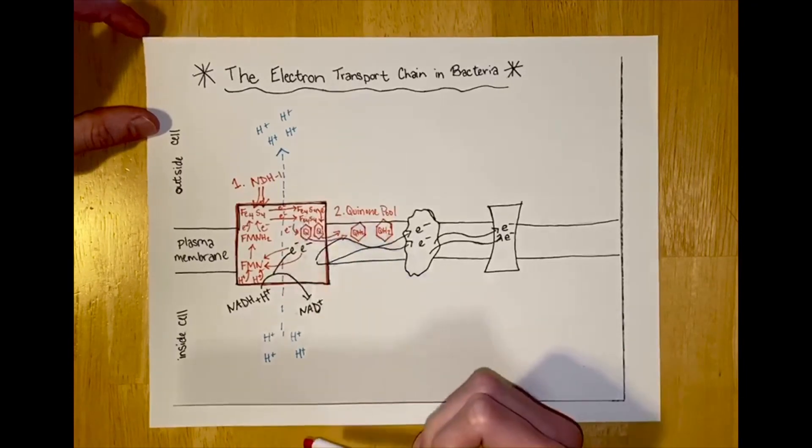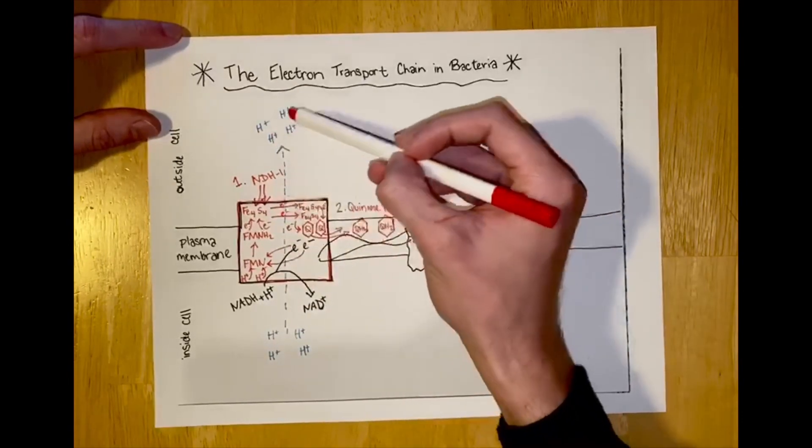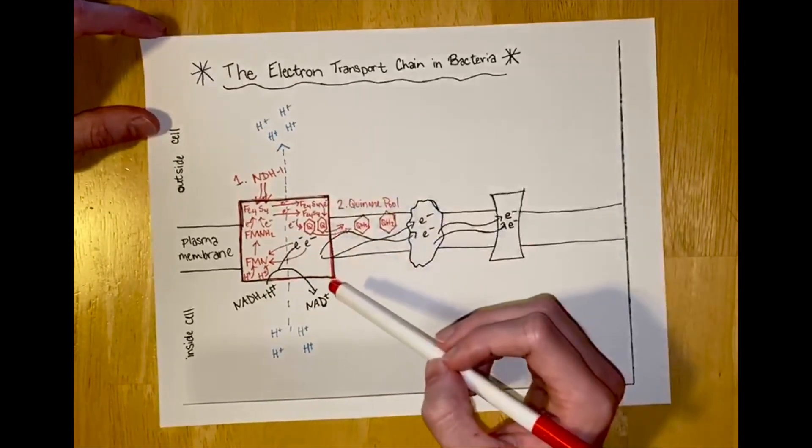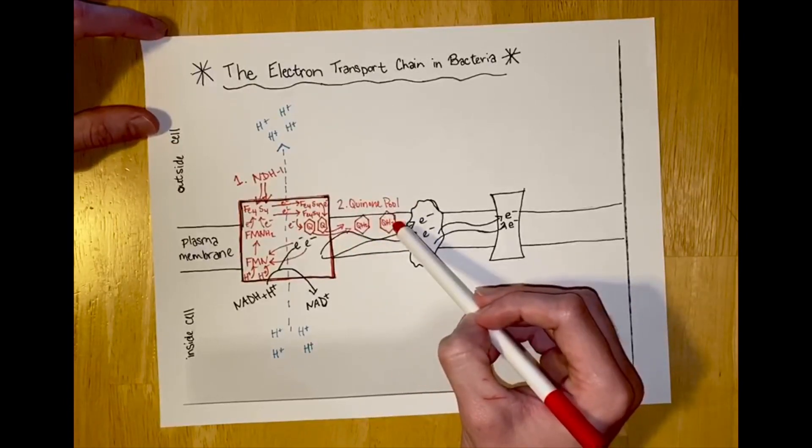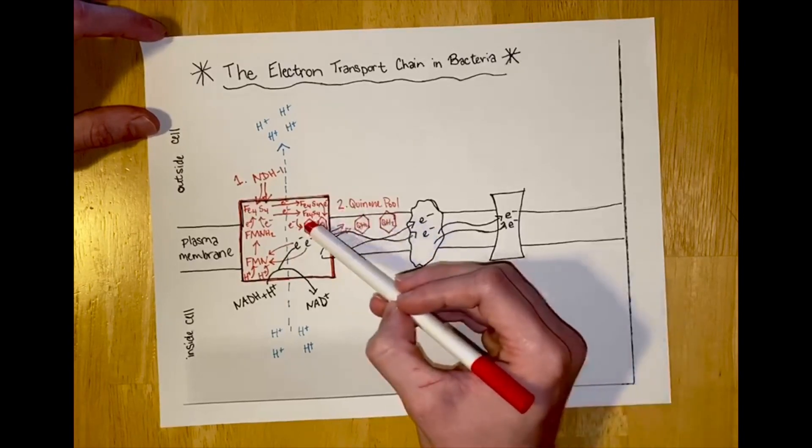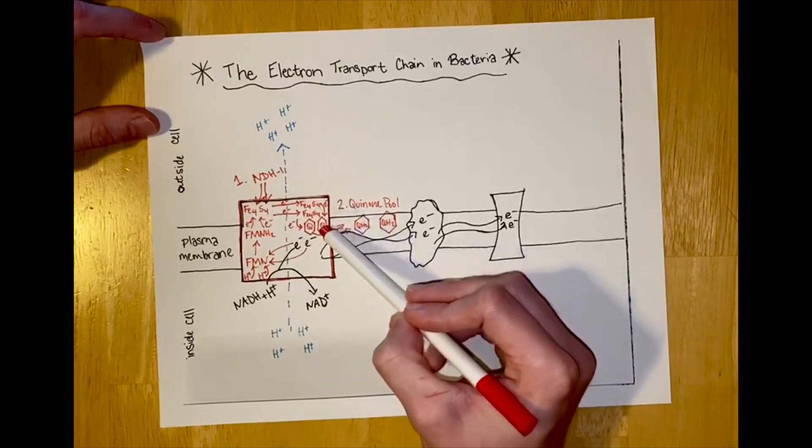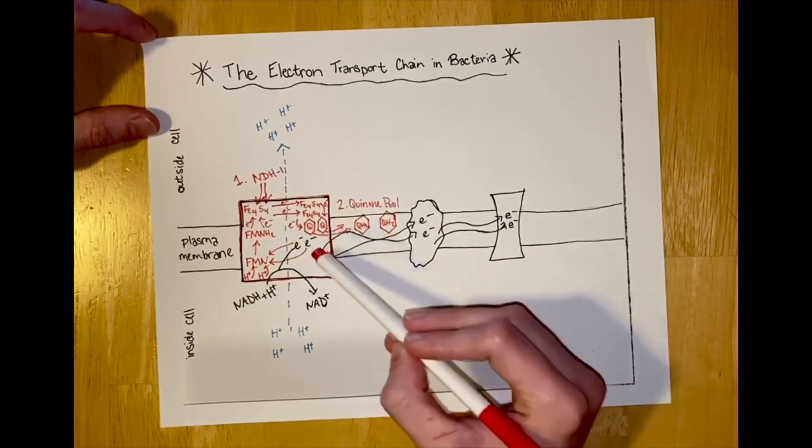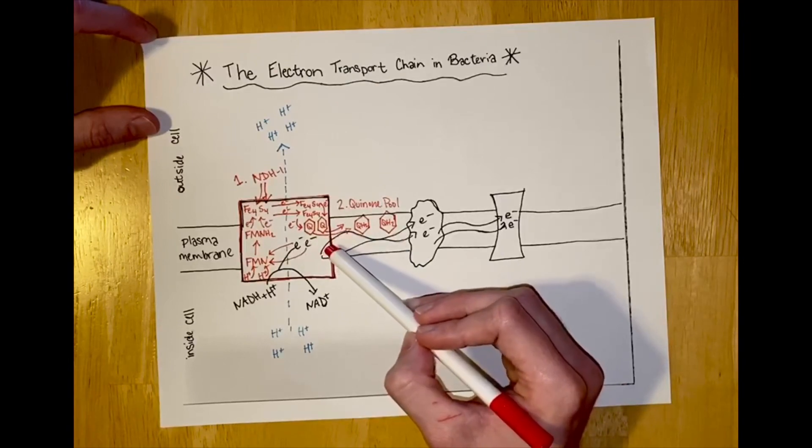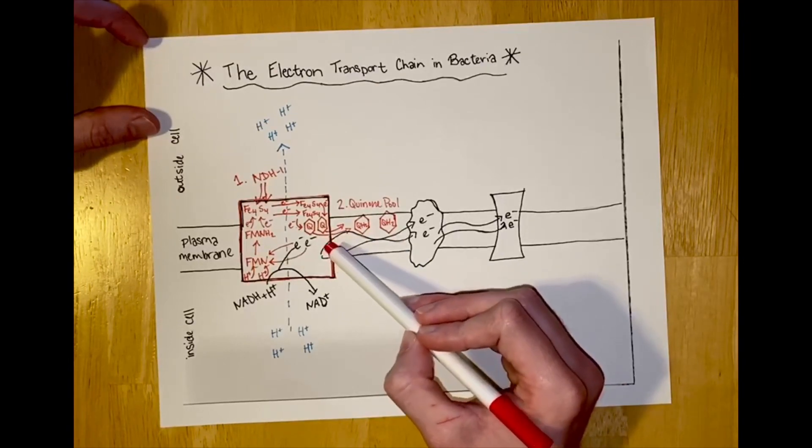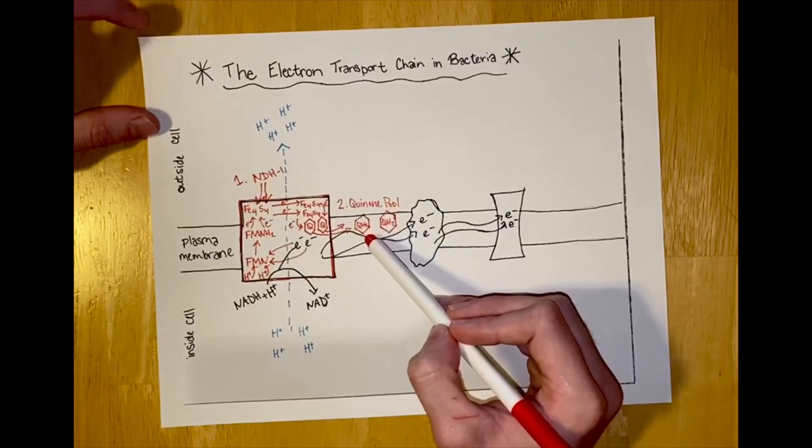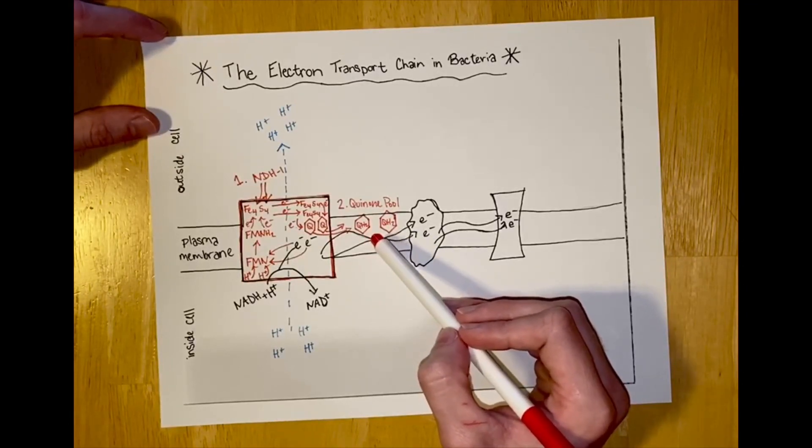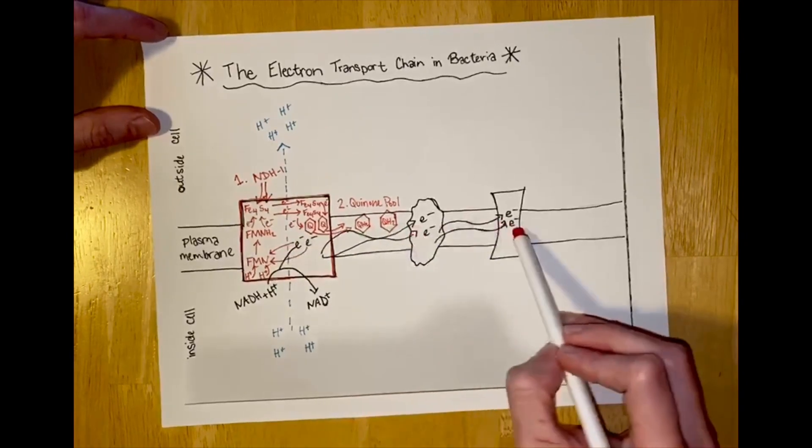The second electron carrier is known as the quinone pool. The two electrons that went through the NDH1 are then picked up by a quinone molecule. This reduces the quinone molecule, so then it is transformed into a quinol or QH2. These quinols diffuse into the membrane and carry the reduction energy from the electrons to other transport carriers.